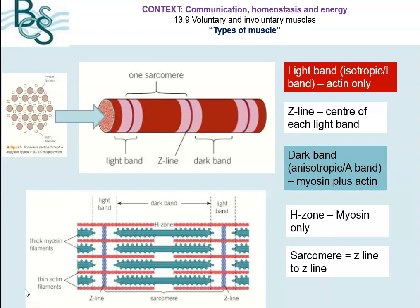There are lots of labels you have to be able to add to these diagrams. The first thing to recognise is that we have light bands and dark bands, and it's those light and dark bands that cause the striations — the stripes — when you look at those cells underneath the microscope. The light band is referred to as the isotropic or I-band, and that area is only made of actin. The dark band is the anisotropic or A-band, and that is made up of myosin overlapping with actin. In the middle of the light band we have the Z-line — the very centre of each of the light bands. Then we've got the H-zone, which is made of myosin only. One unit from Z-line to Z-line is referred to as one sarcomere, and that's what you need to understand when we look at muscle contraction next time.